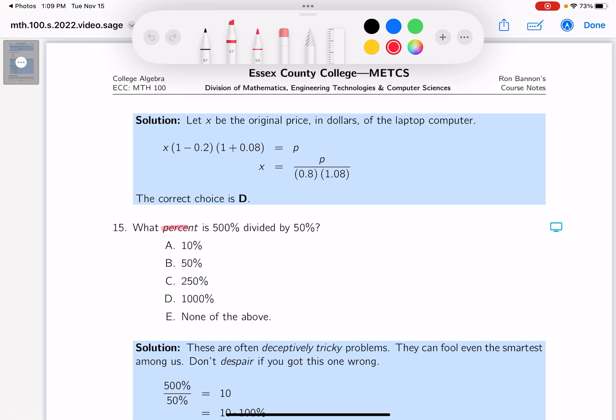The question is: what's the percent when you divide 500% by 50%? I'm going to write that down: 500% divided by 50%. Let's be careful about this. So 500%, that's actually 500 out of 100, and 50% is actually 50 out of 100.